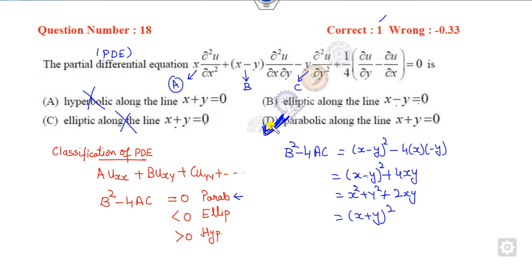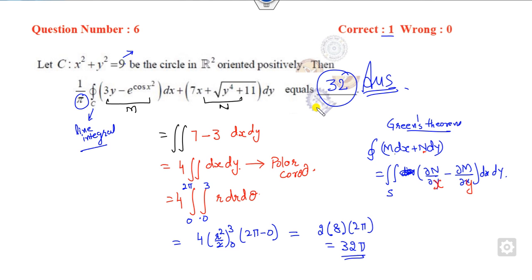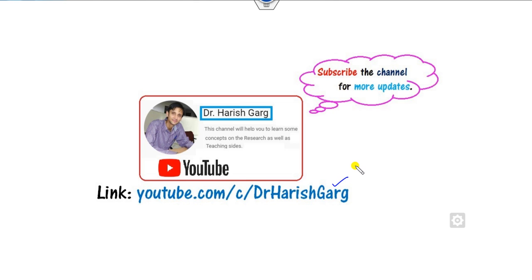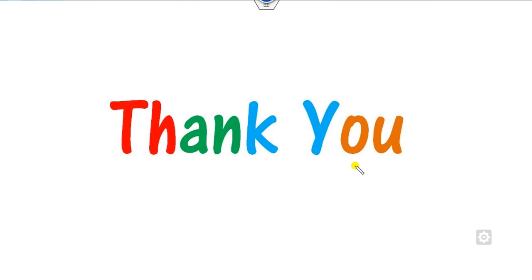You can see these are the four questions which can be solved in a very simple manner. The most important concept here is the line integral — whenever you see a line integral, use Green's theorem. In the next class, we will summarize all the vector algebra questions from GATE 2017 to 2021. Till then, share this video with your friends, subscribe to the channel — best of luck students, happy learning.